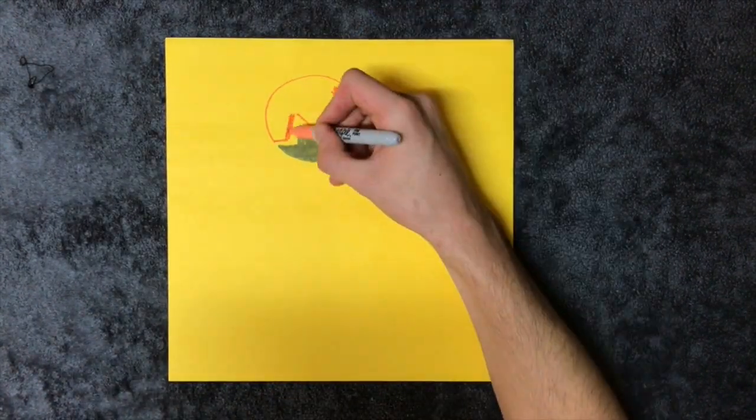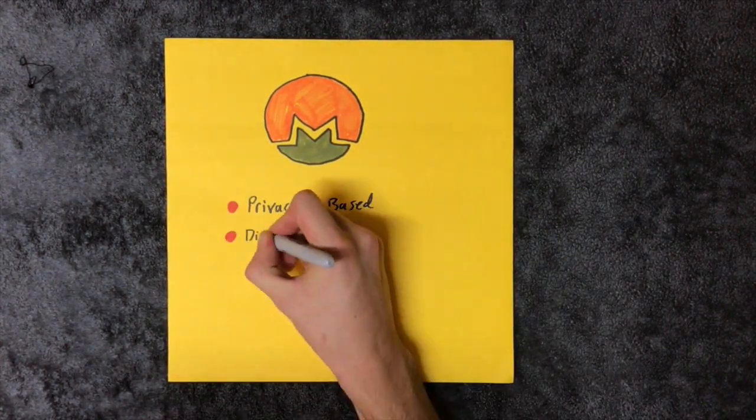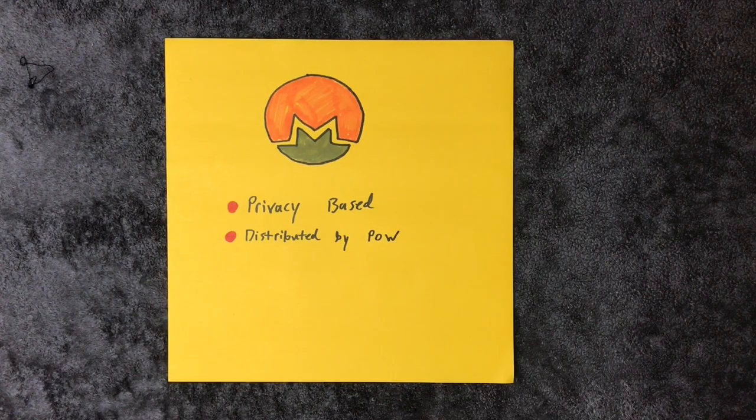Monero is a cryptocurrency with one goal: absolute privacy. It is a community-made currency that had no ICO or pre-mine and was distributed by proof-of-work mining.